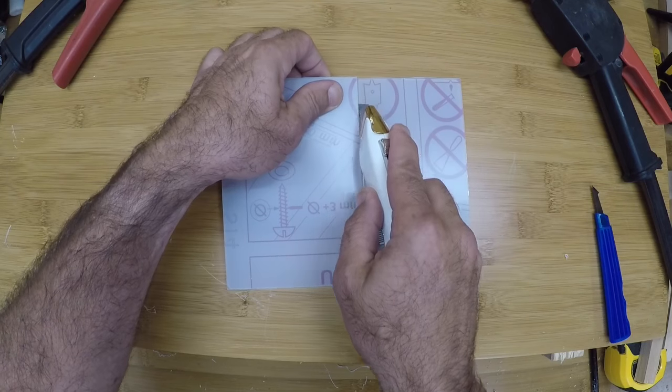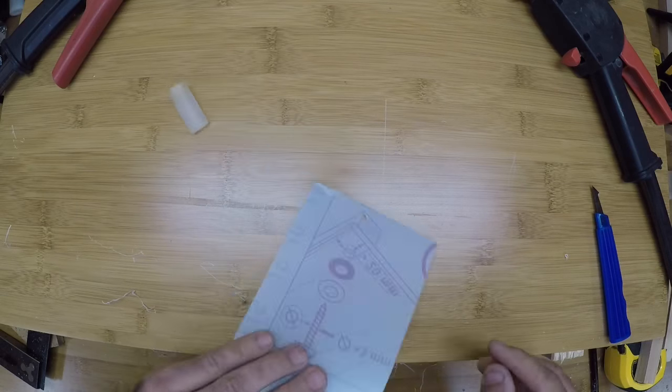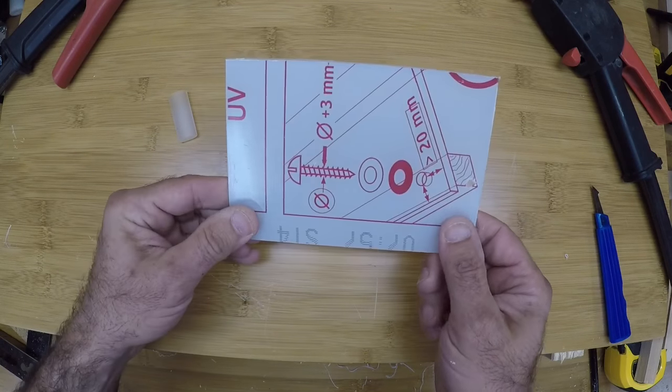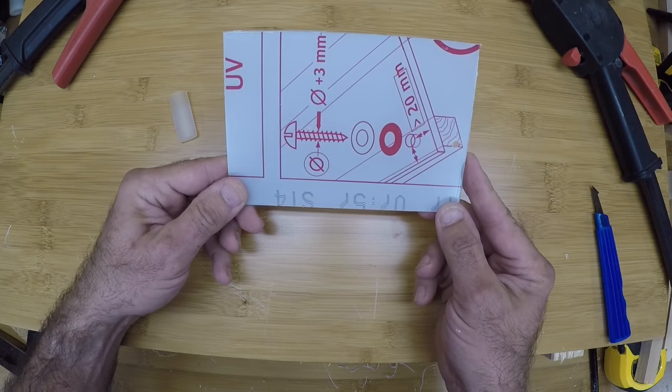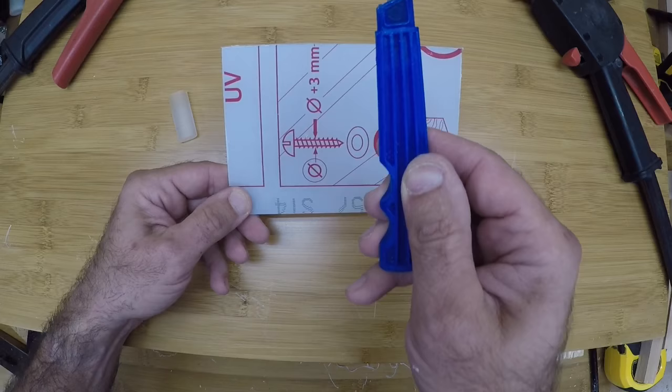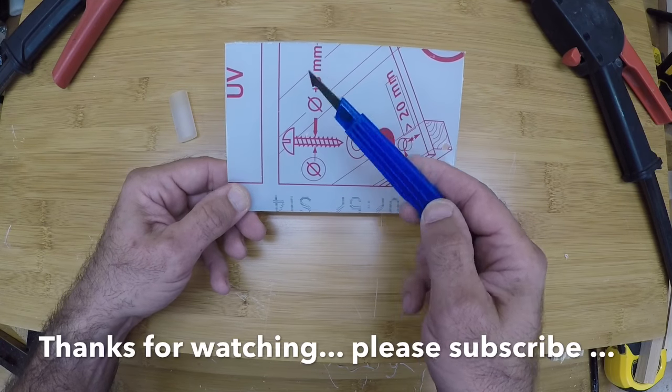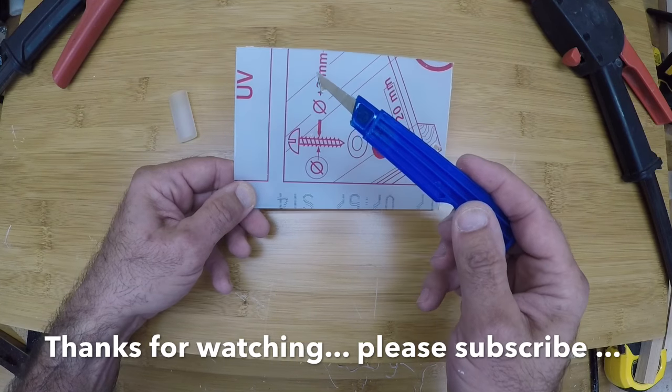There you go. There's a piece of polycarbonate cut. We'll take the protective plastic off and be able to use it on our project. Hope that helped and showed you how easy it is to use just this little tool that probably cost, I can't remember what I picked it up for, probably less than five or six dollars. Have a great day.